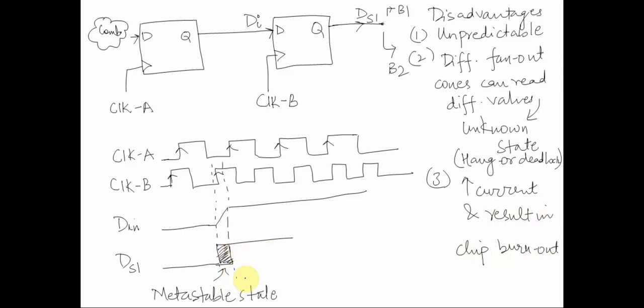So this is an example of a metastable state and these are the consequences: behavior being unpredictable, different fanout cones reading a value differently, the system going into an unknown state, and eventually resulting in high current and chip burnout.